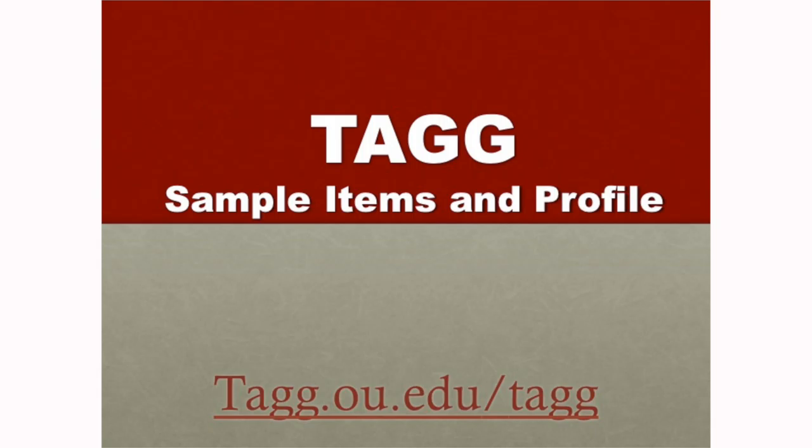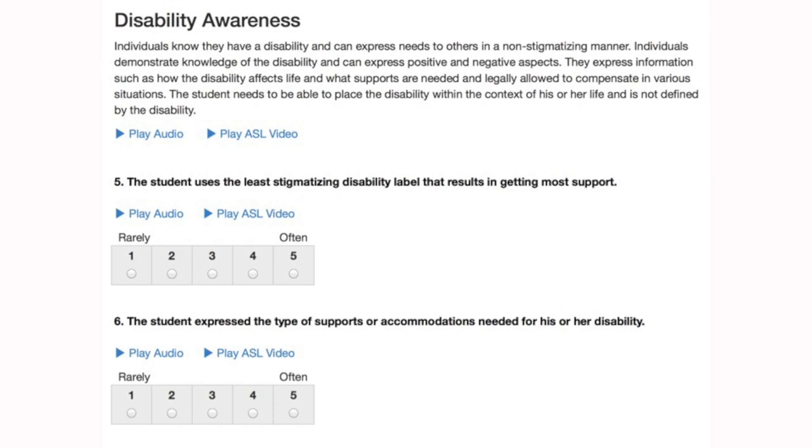In your packet on the next page, it lists student behaviors associated with post-school employment and education — all those constructs — and tells you a bit about each. For example, disability awareness is the ability to report accurate information regarding one's own disability and express types of accommodations needed. I pulled a few slides to show you what TAG looks like. The disability awareness screenshot shows what the actual TAG assessment looks like — it has an audio option and American Sign Language option, so they've really thought about their audience. You score it from one to five: rarely to often. The student, parent, and educator each take essentially the same questions.